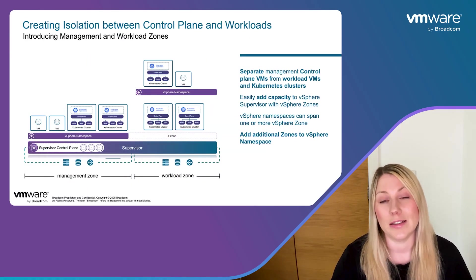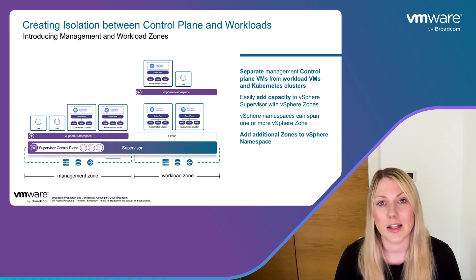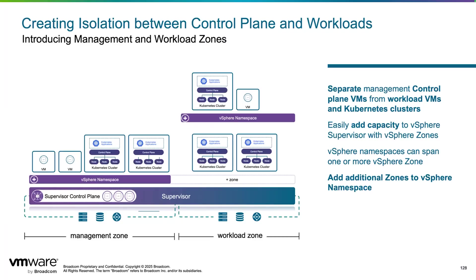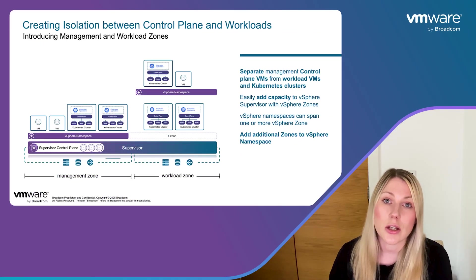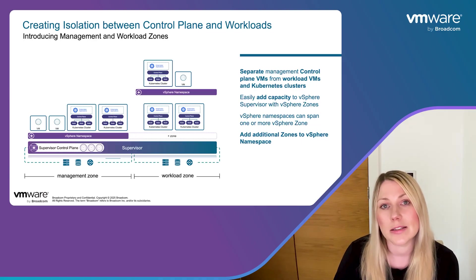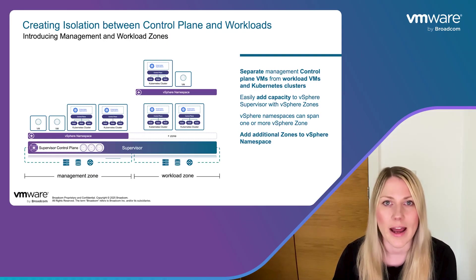When it comes to capacity with Supervisor, especially in larger environments, we have introduced the capability to isolate the management and workload zones of the Supervisor. When you first enable vSphere Supervisor, we deploy a Supervisor Control Plane that acts as the management function, and that zone is automatically marked as the management zone. We can then add additional vSphere zones to the Supervisor to provide further capacity for workloads, and decide whether to extend vSphere namespaces over these zones without deploying the control plane overhead on all of them.